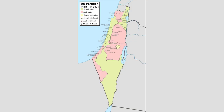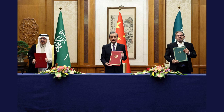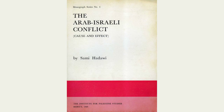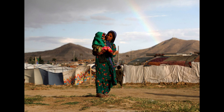In 1947, the United Nations proposed a partition plan, dividing Palestine into separate Jewish and Arab states. The plan was accepted by Jewish leaders but rejected by Arab nations, who saw it as an infringement on their rights. This rejection led to the 1948 Arab-Israeli war, as neighboring Arab states sought to prevent the establishment of a Jewish state. The war resulted in Israel's independence and the displacement of hundreds of thousands of Palestinians, creating a refugee crisis that still persists today.